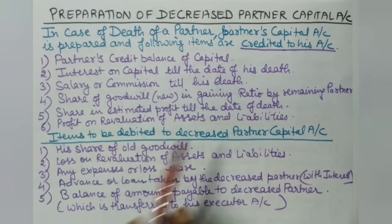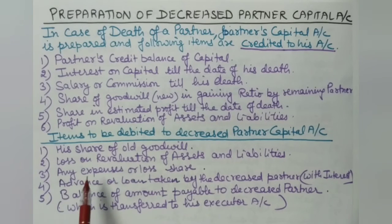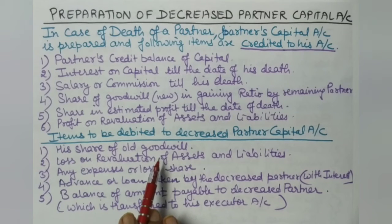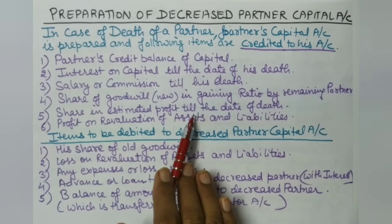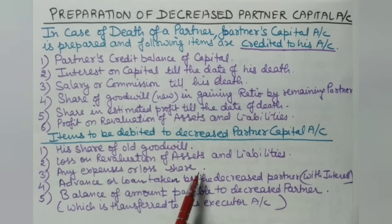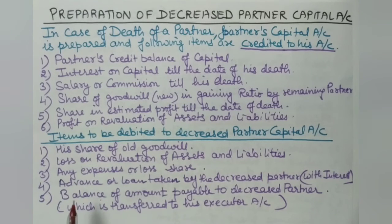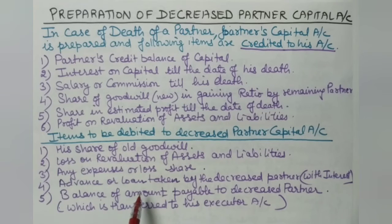Now, the items debited to the deceased partner's capital account: First debit item is his share of old goodwill — if the balance sheet already showed goodwill before the death, when we write it off, the deceased partner's share is debited to his capital account. Second debit item is loss on revaluation of assets and liabilities — if the revaluation results in a loss, that share is debited. Third debit item is any deferred revenue expenses or other losses — these are distributed in the old profit-sharing ratio and debited accordingly.